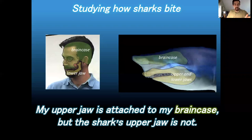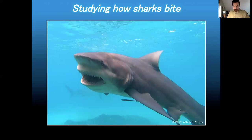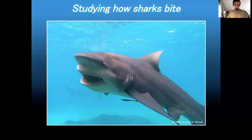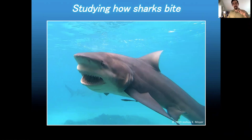My upper jaw is attached to my brain case, but the shark's upper jaw is not. With jaws that can move around like that, combined with different sizes and shapes of teeth across different species, we see a lot of differences from one species to the next regarding how sharks eat their food. That can tell us a lot about how sharks might be related to each other, about their ecologies, and can help us learn about extinct species of sharks. There are lots of things we can learn from looking at teeth, jaws, and feeding performance in sharks.